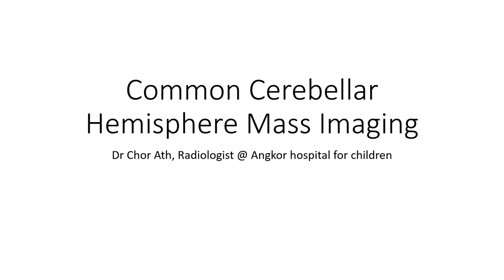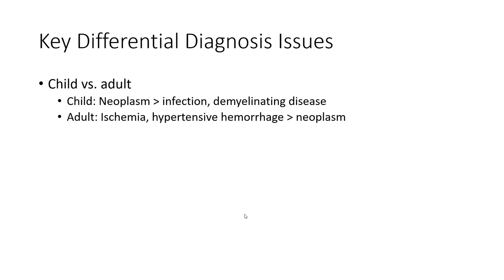Hello, everyone. Today I'm going to talk about Common Cerebral Hemisphere Mass Imaging: Key Differential Analysis Issues — Children vs. Adults. In children, neoplasm and predominant infection are key. In adults: demyelinating disease, ischemia, hypertensive hemorrhage, predominant infection, and neoplasm.